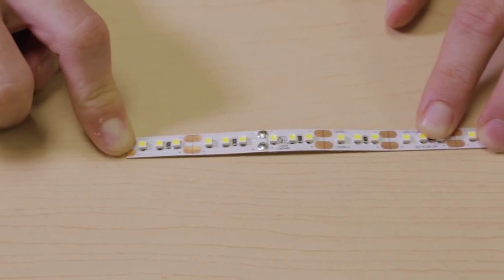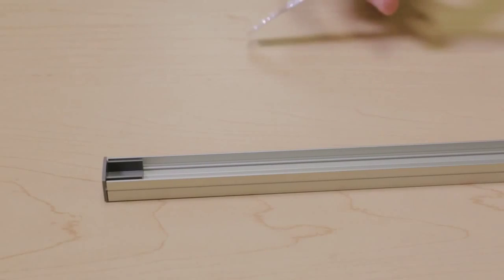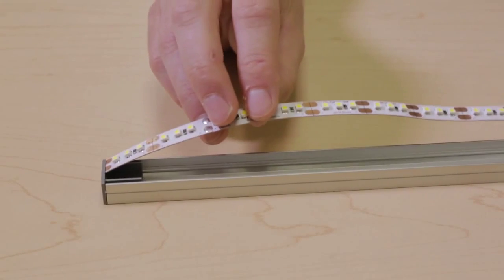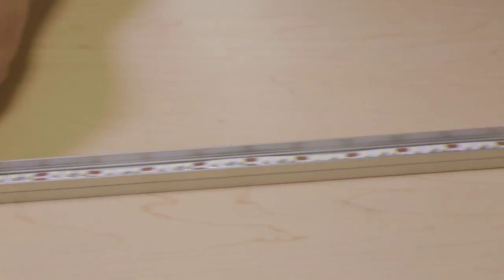When cutting the flex tape, be sure to only cut at the center of the copper contacts. It's okay for the flex tape to extend over the flat end of the closed end cap in the extrusion channel.